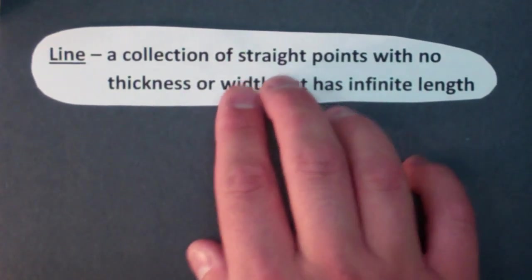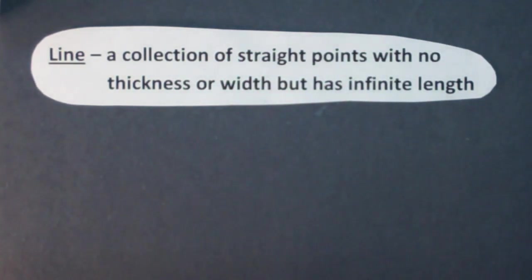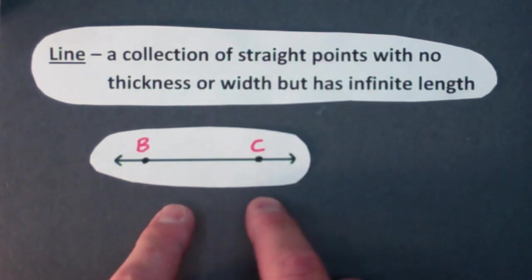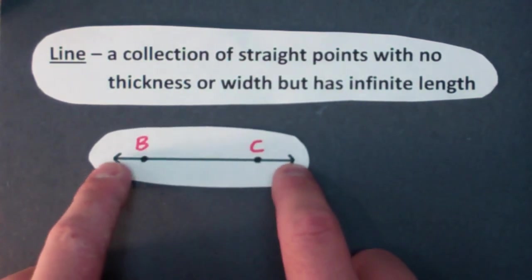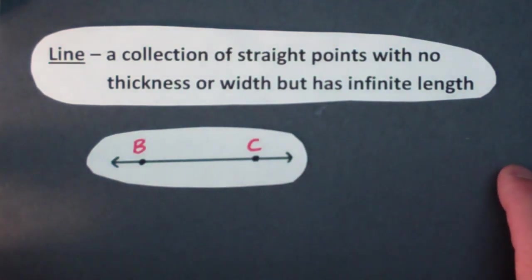The word line is a collection of straight points with no thickness or width but has infinite length. And I've got an illustration of a line right here. Again it's important to understand that there are arrows on either end of this. So two arrows indicate that this line is going to go on forever in both of these directions.